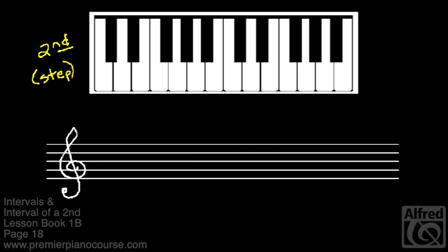Now let's look at seconds going down. Here's what a second going down on the keyboard looks like. If I start on A and go down a second, I'll go to G. From A to G is down a second.